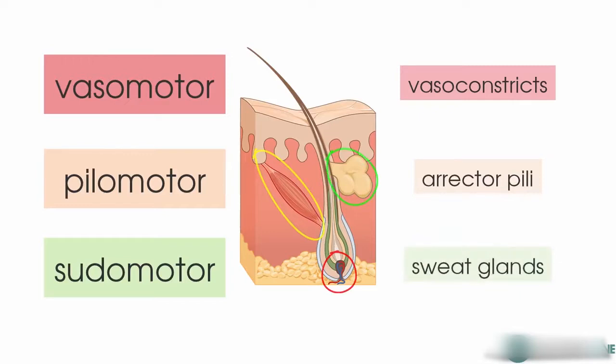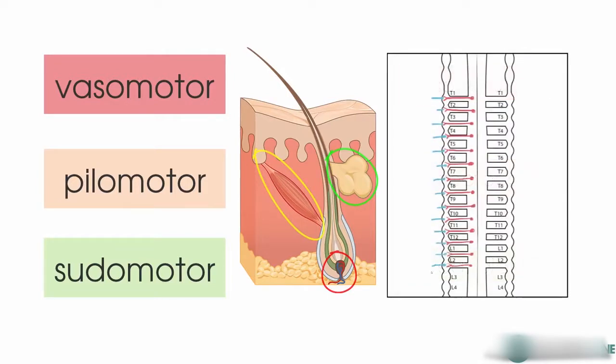So three functions there: pilomotor, vasomotor, sudomotor. You get this kind of configuration in which the skin is supplied by sympathetic fibres at every spinal level.